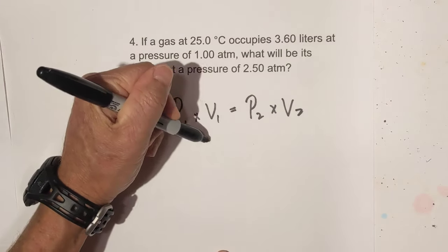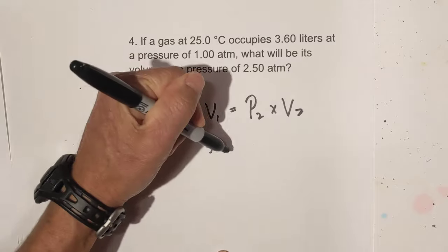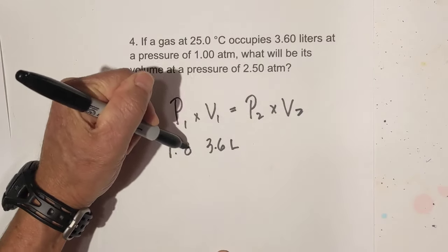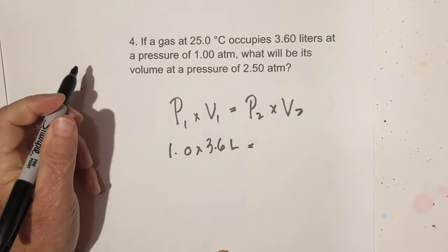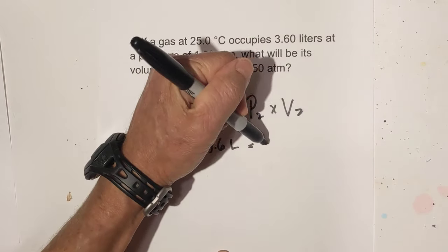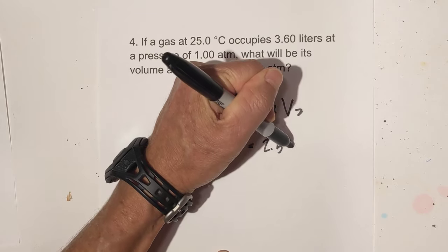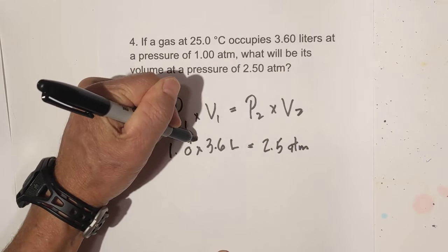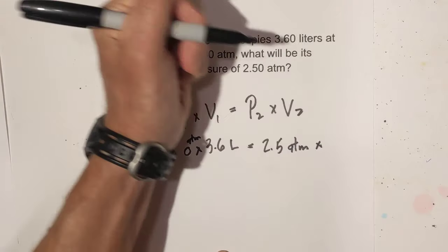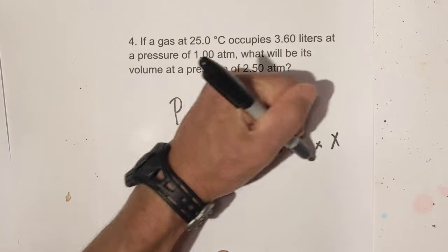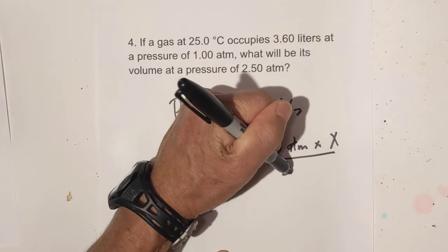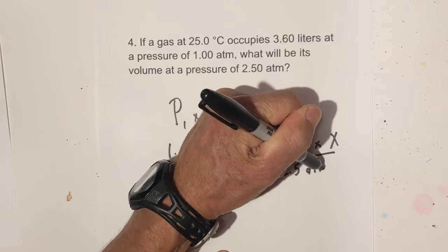Well, we have a volume of 3.6 liters, and then we have a pressure of one atmosphere, and that is going to be equal to a pressure of 2.5 atmosphere times x, and we're trying to find volume. So now what we do is we just divide through by 2.5 atms. These units cancel. These cancel.